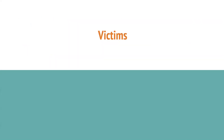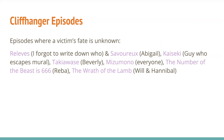Cliffhanger episodes where a victim's face is unknown: I actually forgot to write down who that was in one episode, so I don't remember. Savoureux is Abigail, because they're trying to imply that Will killed her. In Kaiseki, the guy who escapes the mural is unknown. Antipasto is where Beverly is killed and it doesn't show who's actually dying. Mizumono is obviously everyone — Hannibal stabs them all. The Number of the Beast is 666 features Reba. And finally, the Wrath of the Lamb, the literal cliffhanger — Will and Hannibal jumping off a cliff.